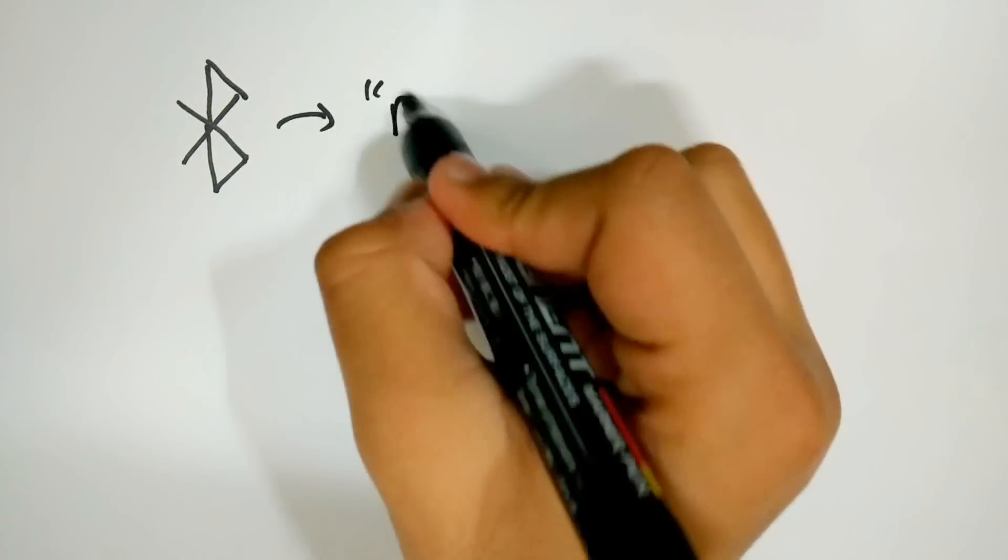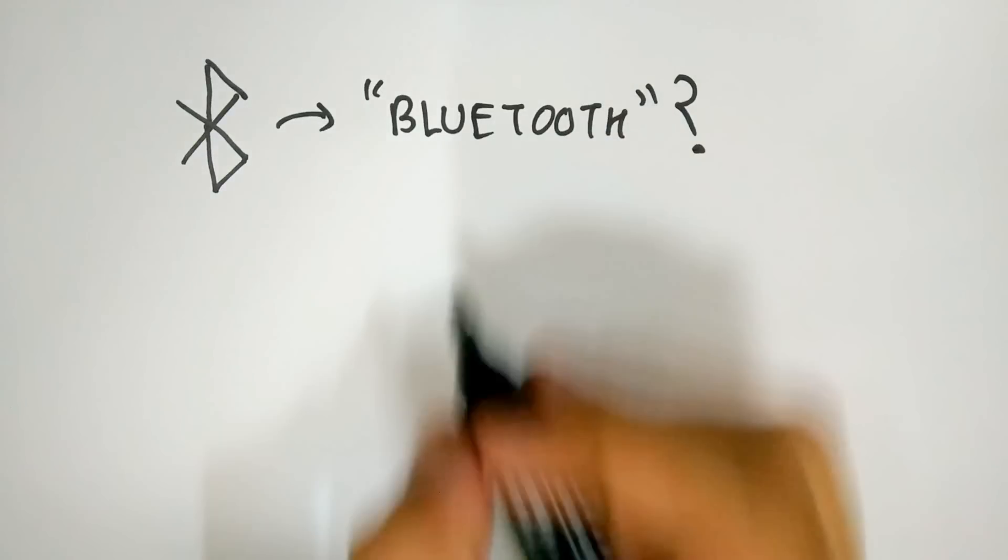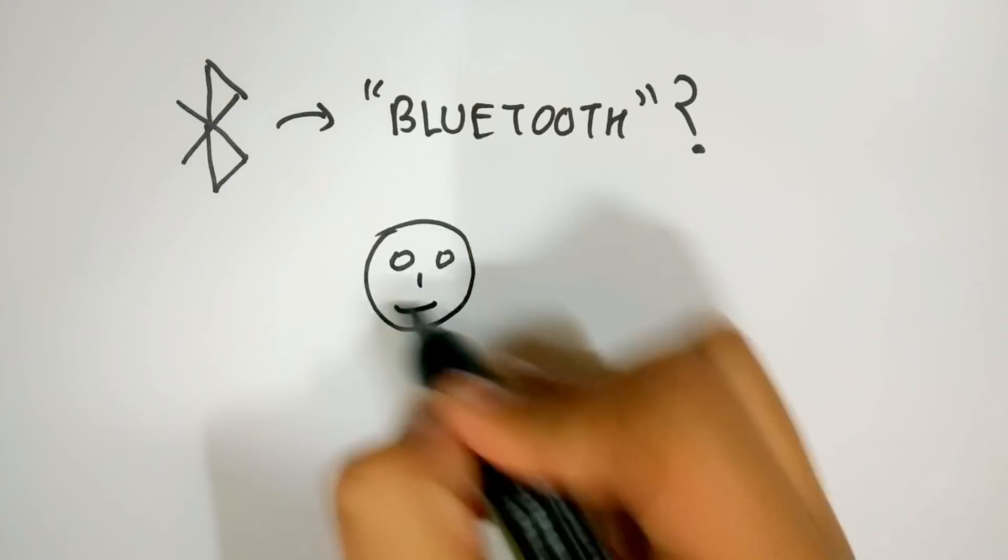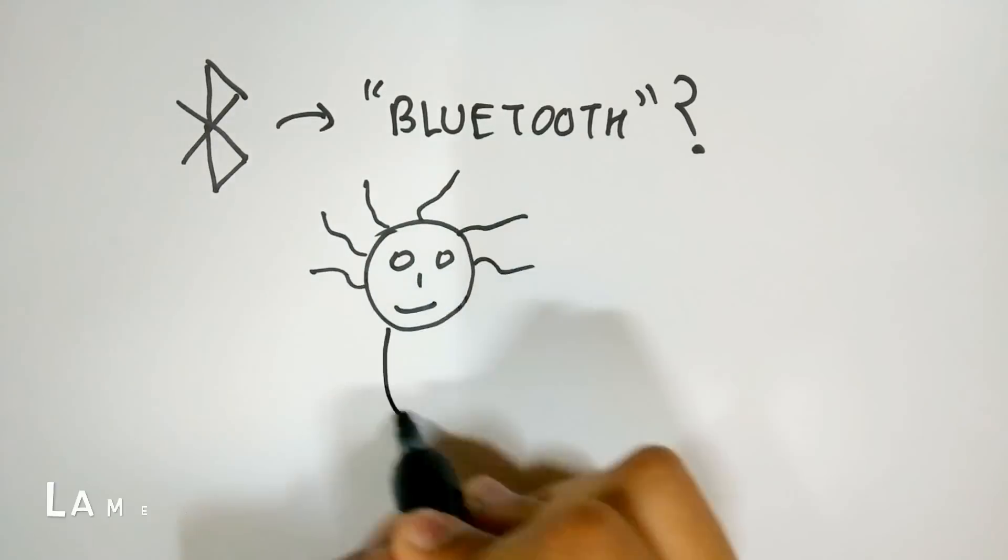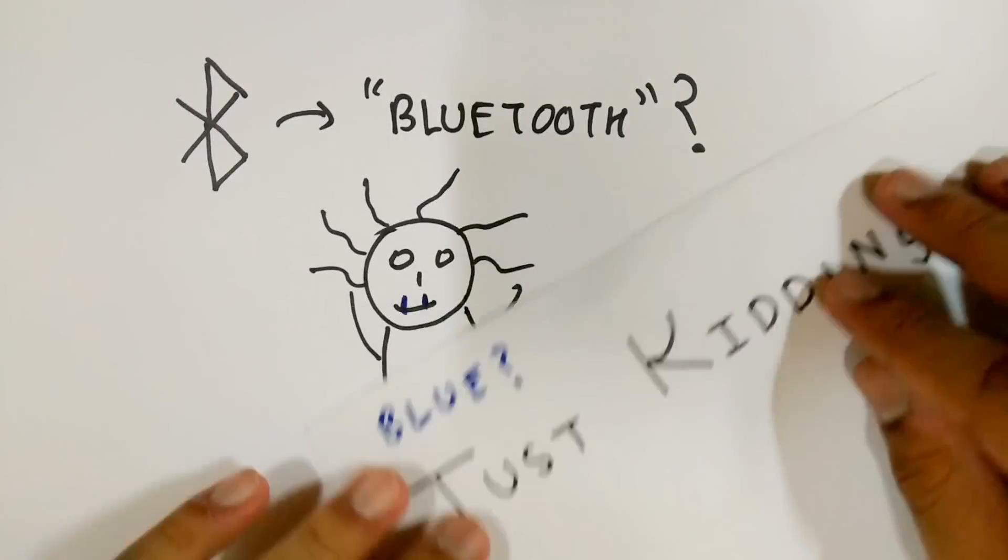We are done with the technical aspects of Bluetooth. Now we want to know, why does Bluetooth have this weird name? Now, many people won't believe me on this one, but Bluetooth is called Bluetooth because the scientist who invented it actually had blue teeth. No, I'm just kidding.